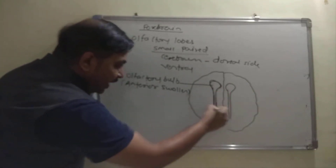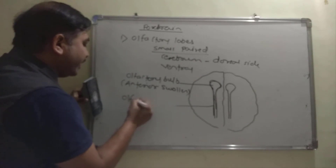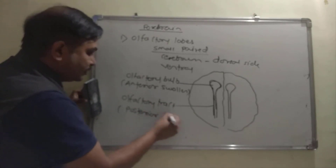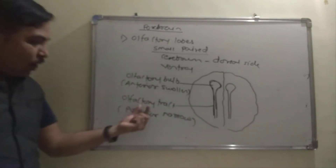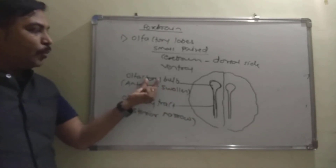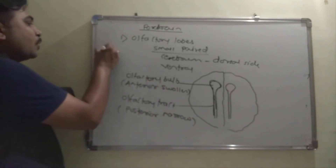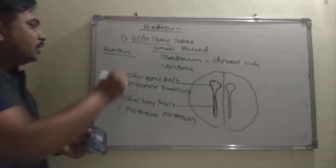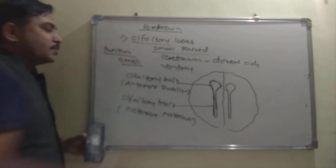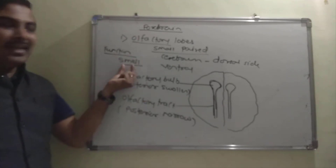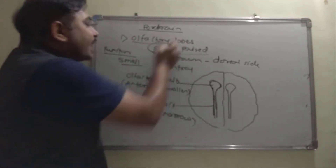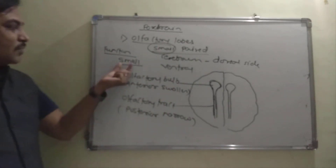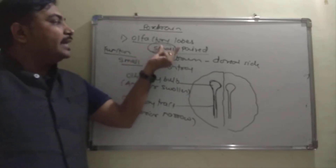The posterior narrow portion is called the olfactory tract, while the anterior swollen portion is the olfactory bulb. The function is simple — olfaction means smell, so olfactory lobes are related to the sense of smell. Because their size is small in humans, we have a poorly developed sense of smell.